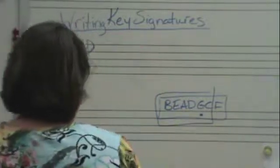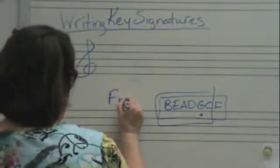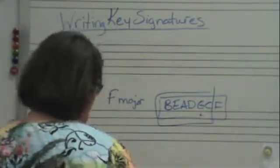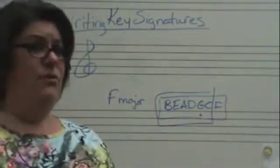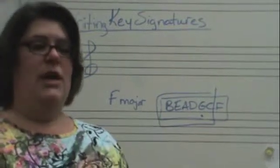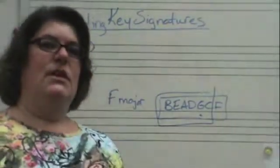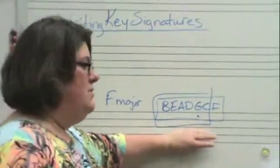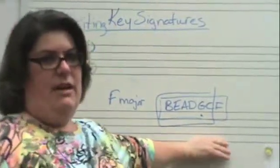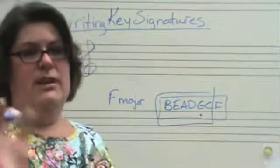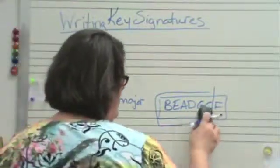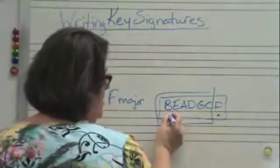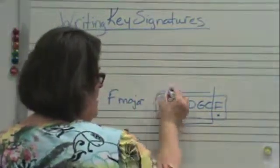Now let's say that they ask for this one. This is the one that the formula just doesn't work for. You have to figure this one out by another way — it's too complicated to use this formula. You can do it; here's how: you find do, which is here, you go forward one, and that's how many you write.